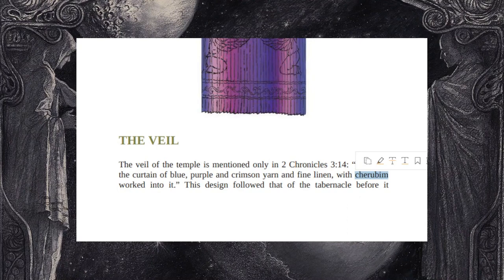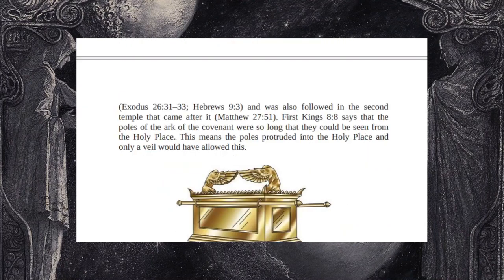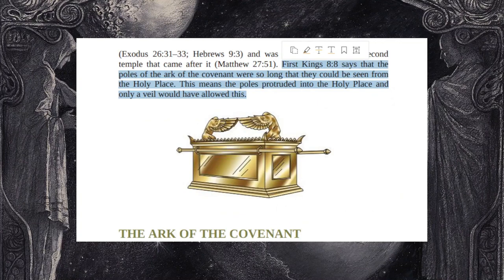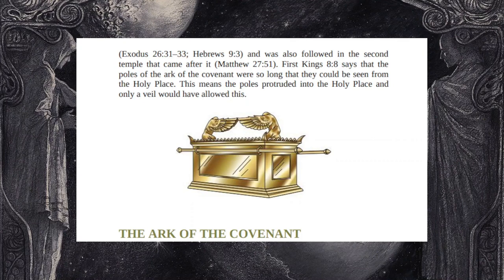This design followed that of the tabernacle before it and was also followed in the second temple after it. 1 Kings 8:8 says the poles of the Ark of the Covenant were so long they could be seen from the holy place — meaning the poles protruded into the holy place, and only a veil would have allowed this. When the Ark of the Covenant is mentioned, it often mentions the ark and the lid separately as if they're two different objects. This lid is sometimes translated 'mercy seat' — it provides some kind of throne or footstool, and again you have this flat surface created by the two cherubim facing each other with wings touching, providing a surface for a throne of some sort.